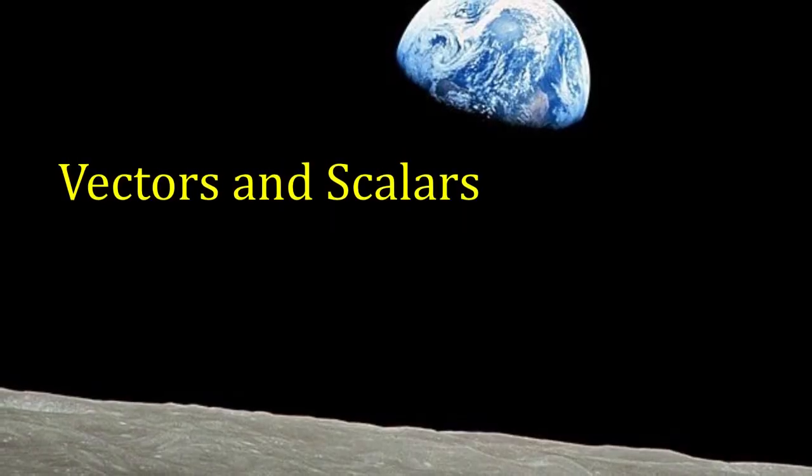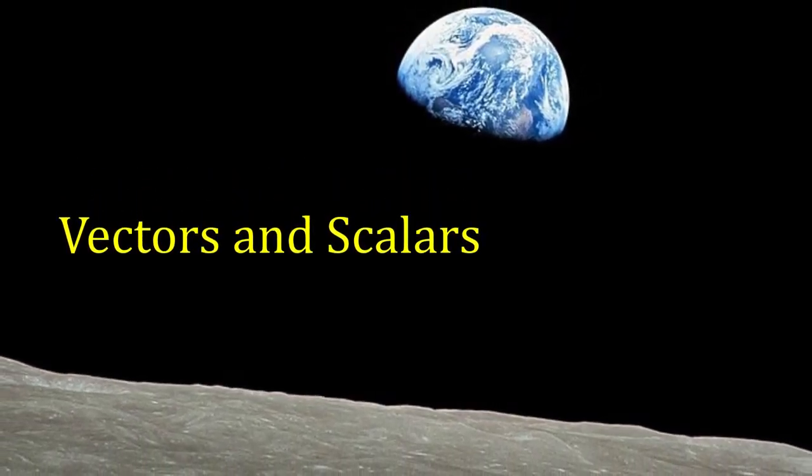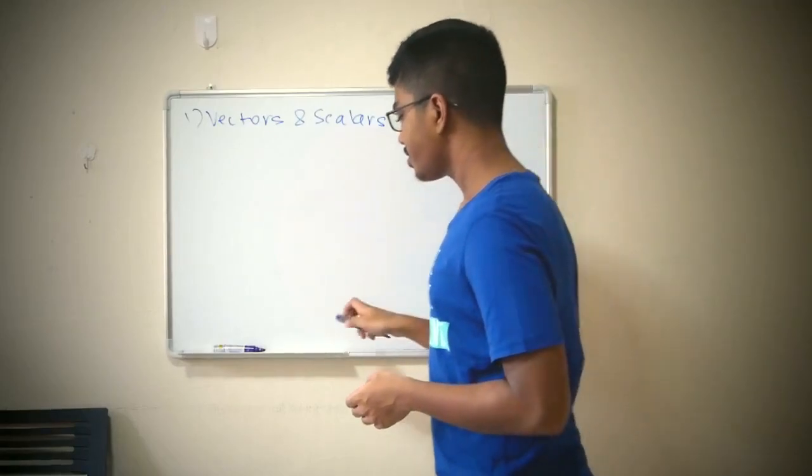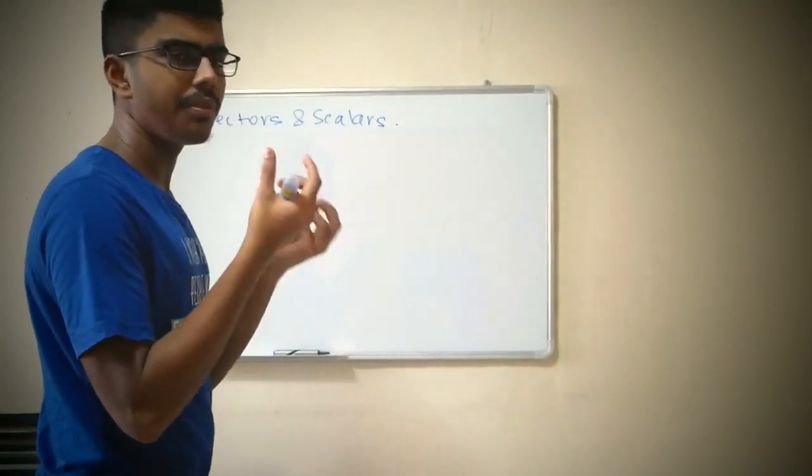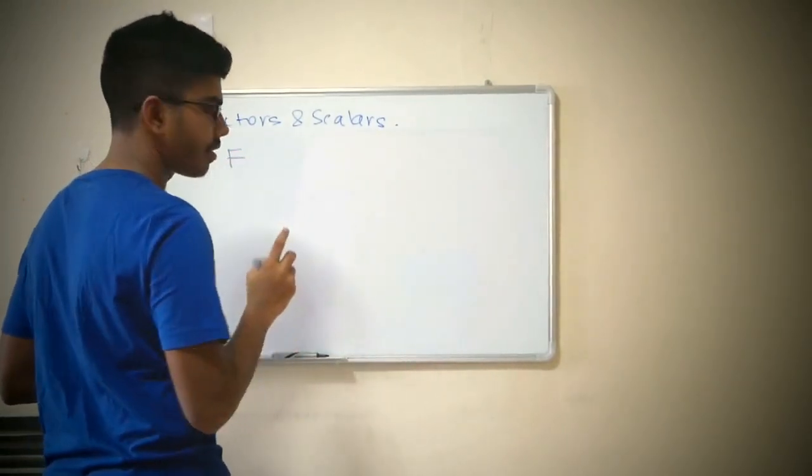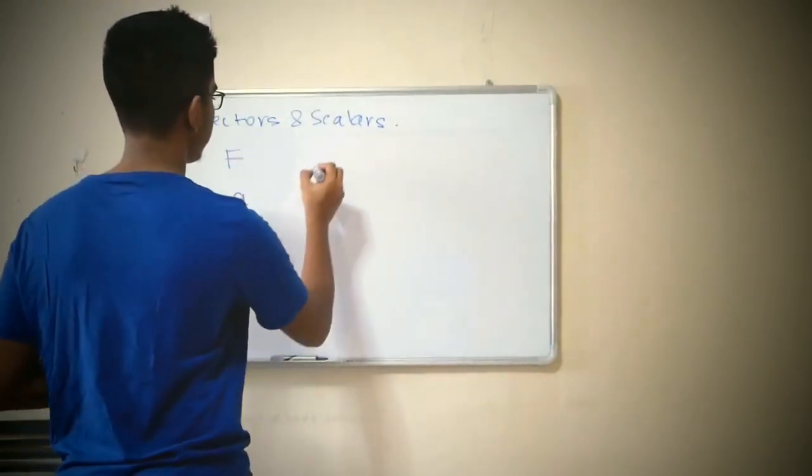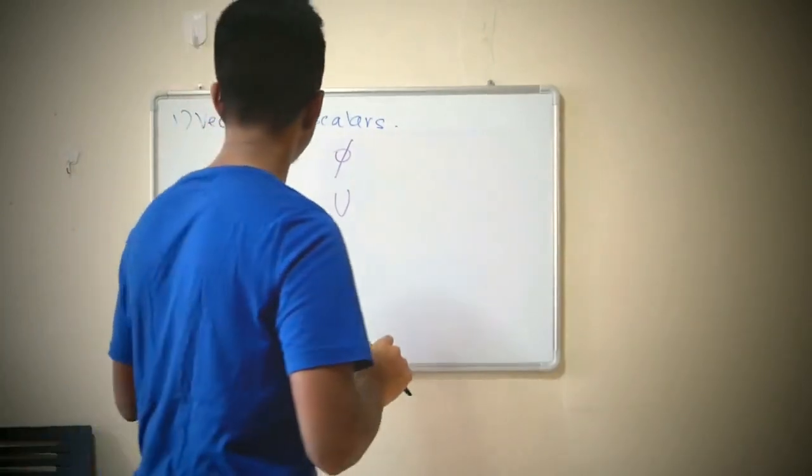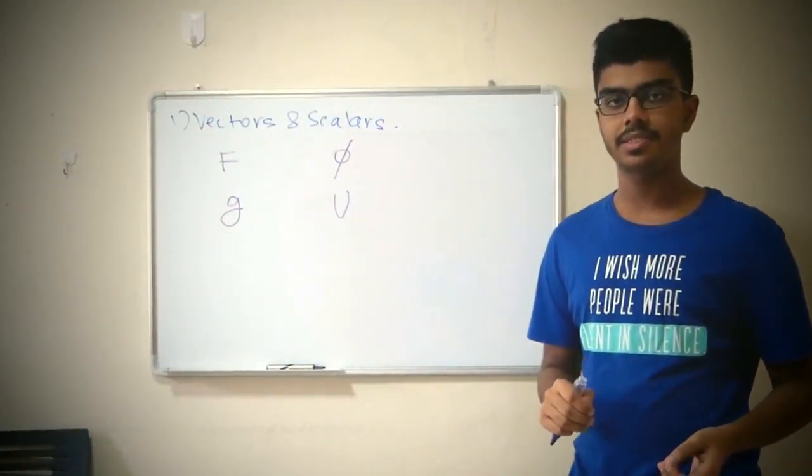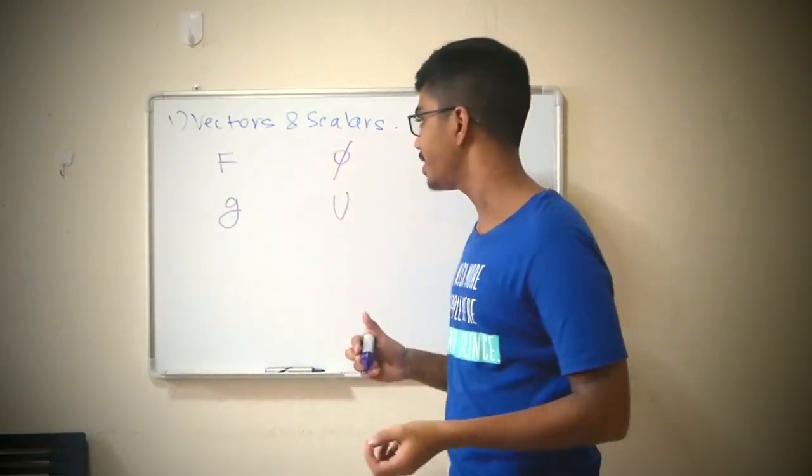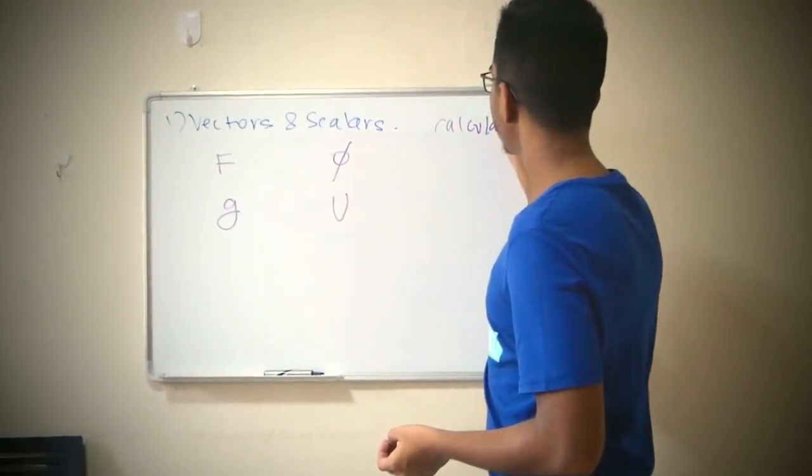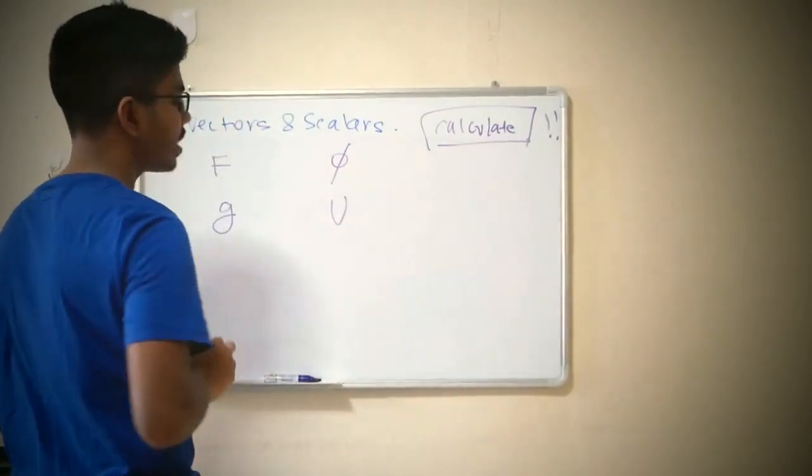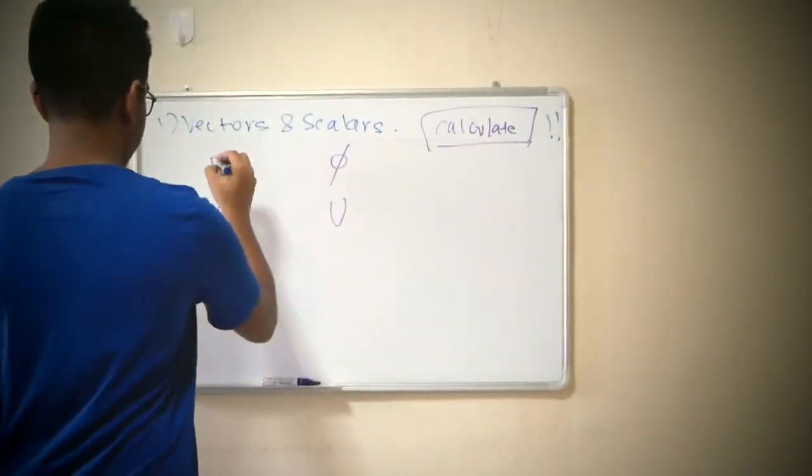Let's come to the first point which is vectors and scalars. A huge problem with this. In this topic of gravitation there are four so-called variables. One is force, one is gravitational field strength, potential and potential energy. Now you have to make the distinction between which is the vector and which are scalars. I had deep trouble with this.